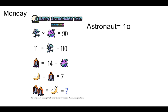Let's take a look at the astronaut. Now, if you had to solve for the astronaut here, you wouldn't really be sure that the astronaut's 10, because this could be 90 and this could be 1. But if you look over here, you'll see the astronaut is the only variable. 11 times 10 is 110.